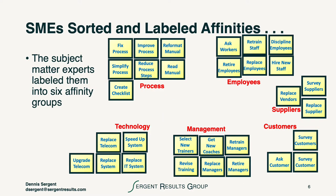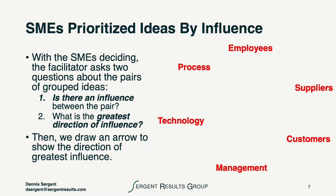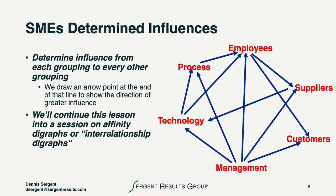We had a grouping of subject matter experts look at all the ideas that they had collected together, and they sorted them and labeled them into categories or affinity groups. We took these groups of affinities between the different ideas, and the subject matter experts labeled them after they agreed to group them together because of their affinities. We asked the question: is there an influence between the pairs, and what's the greatest direction of influence? We drew arrows, and in that last example, we identified that management had the most outgoing influence on the other categories and groupings.